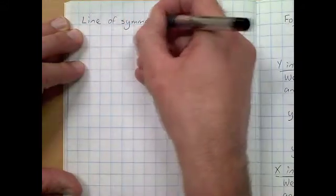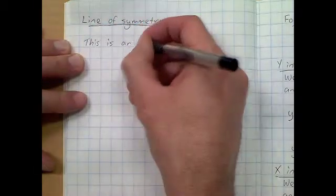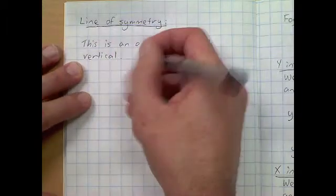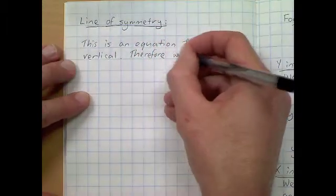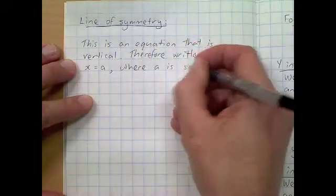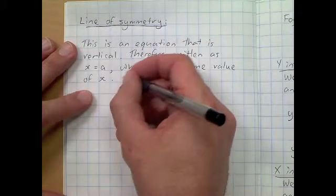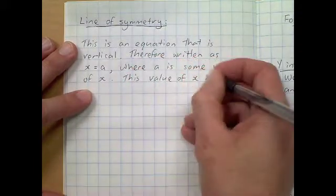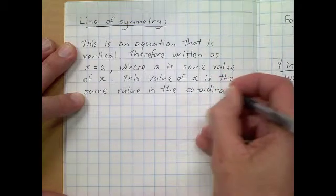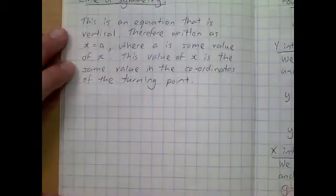After finding our x-intercepts, we're going to find the line of symmetry. The unique aspect about the line of symmetry is that we're after an equation — a vertical equation in the form x equals a, where a is some value of x. The line of symmetry passes through the turning point, so the x value of the line of symmetry will also be the same x value in our turning point.